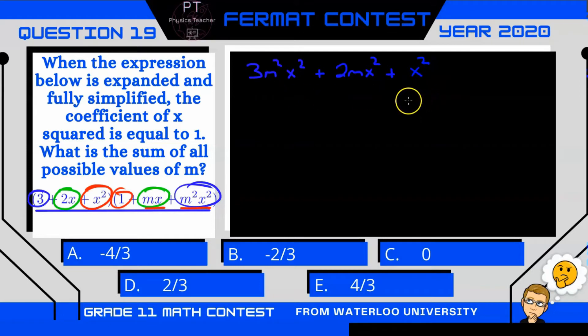So now we can simplify these. Let's pull out x squared. And we're left with 3m squared plus 2m plus 1.